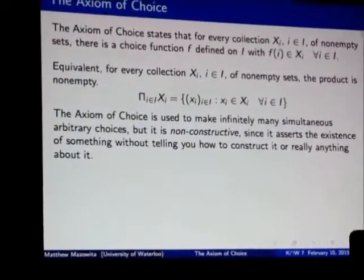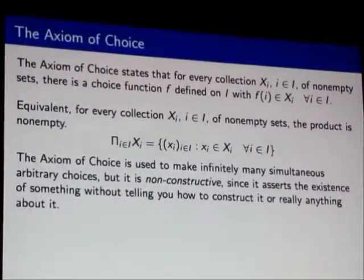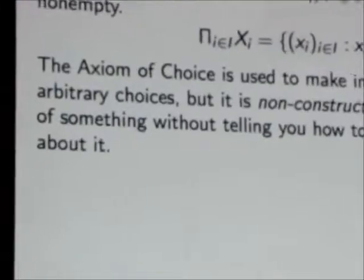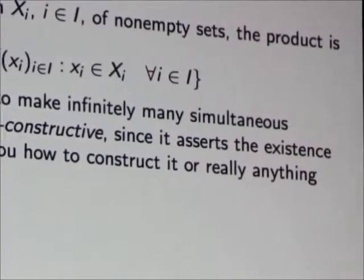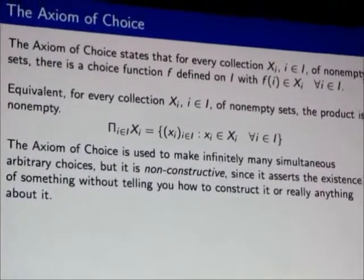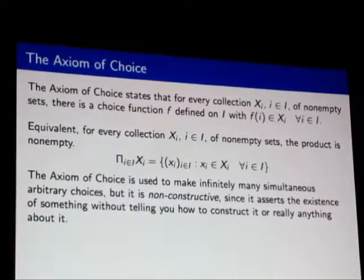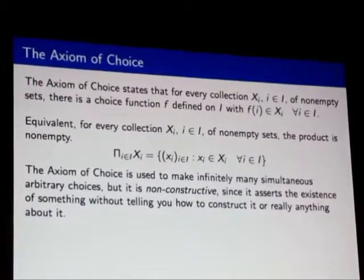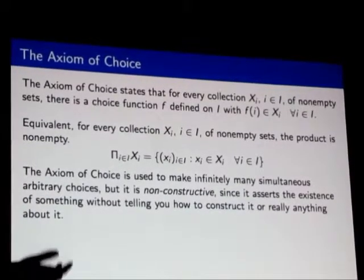If you prefer, you can rephrase this in terms of products. It says that if I have an infinite collection of non-empty sets, the product of those sets is non-empty. This is the mathematical notation for the product. A way of rephrasing this choice function business is that the product of non-empty sets is non-empty, which seems like a fairly innocent assumption.